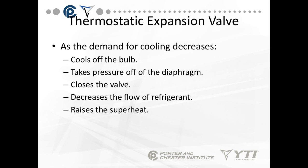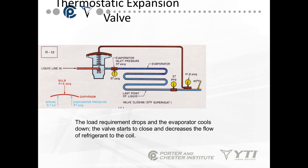As the demand for cooling decreases — in other words, the system has caught up and the box is now nice and cool — it cools off the bulb, takes pressure off the diaphragm, and closes the valve. It decreases the flow of refrigerant and raises the superheat. The load requirement drops, the evaporator cools down, and the bulb pressure is now under that of the evaporator's spring pressure. The needle gets pushed up and decreases the flow of refrigerant to the coil.